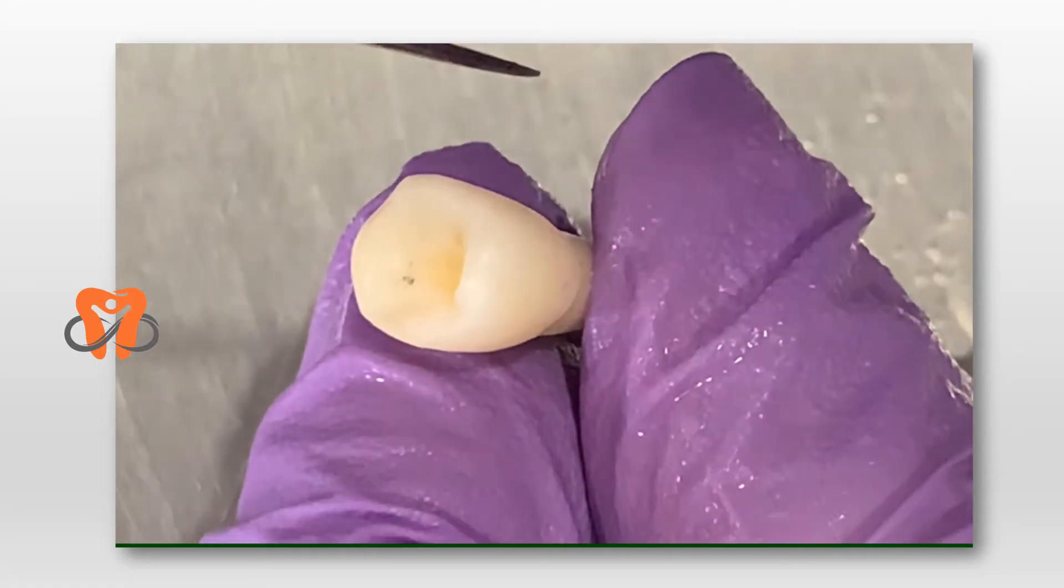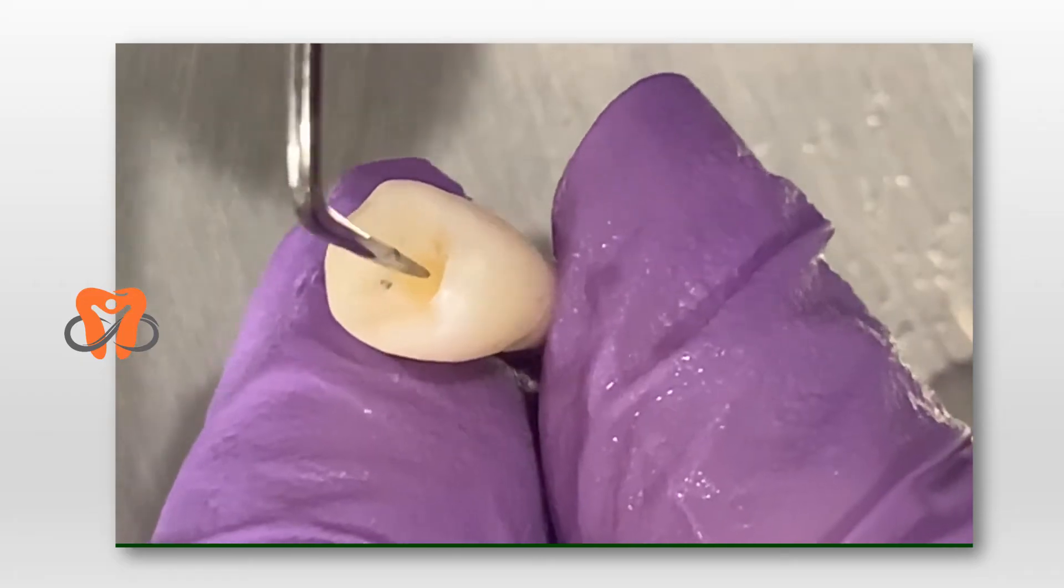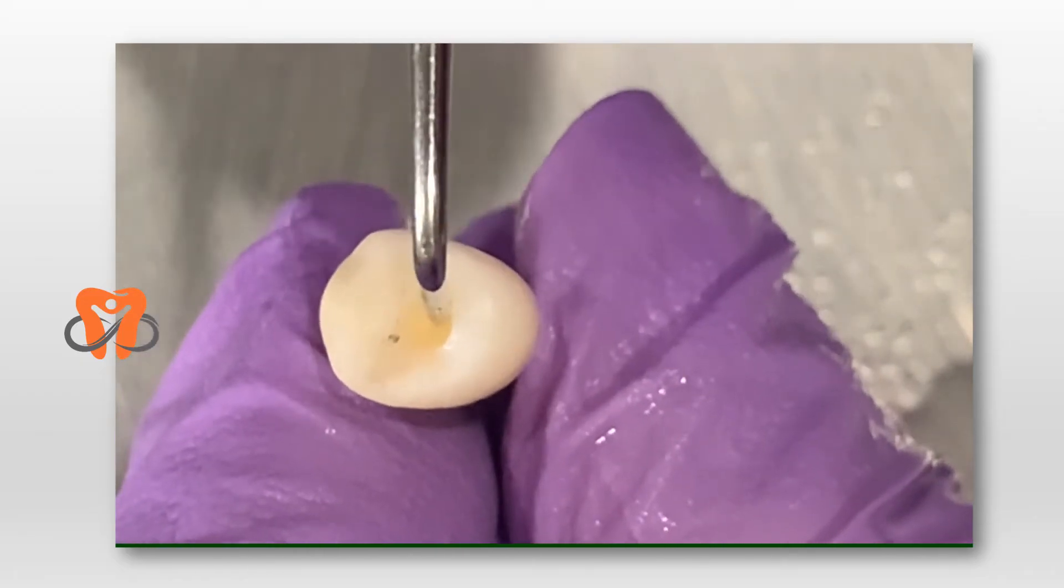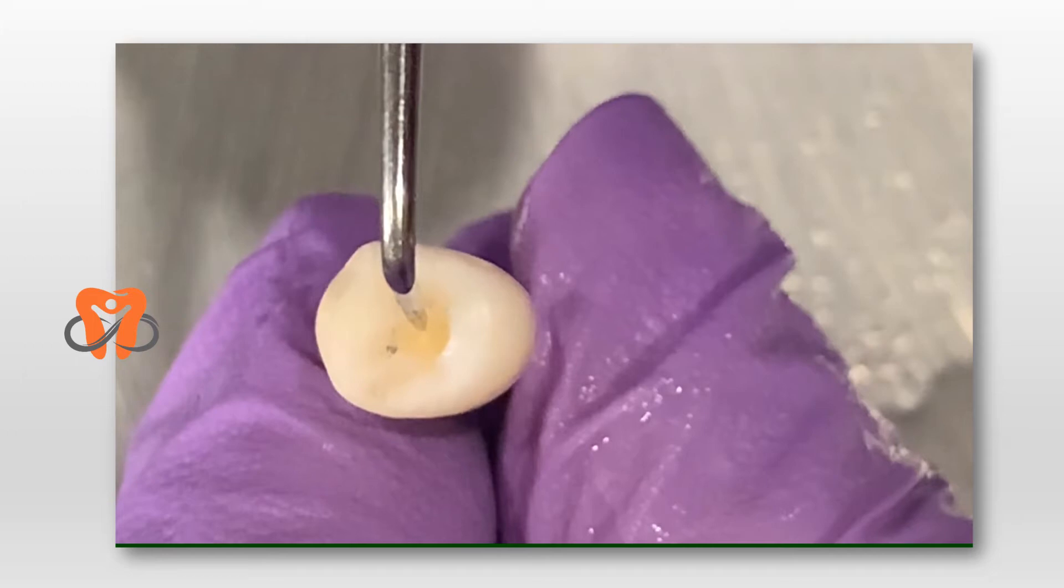I have cut through the enamel and I've made a notch. Now keeping the burr in the same position, we'll cut deeper into the dentine to reach the pulp chamber.